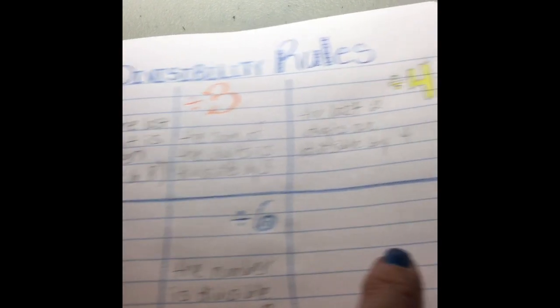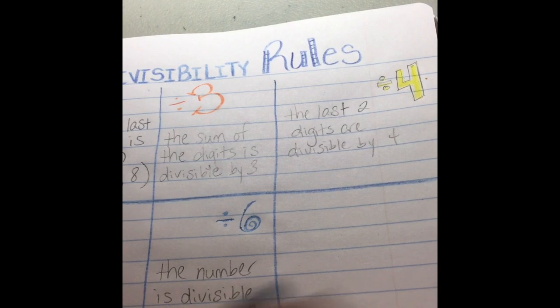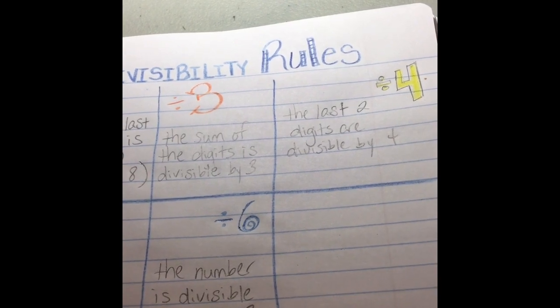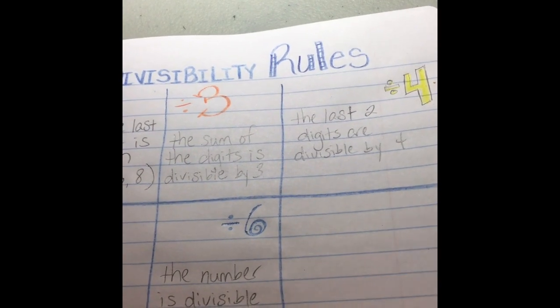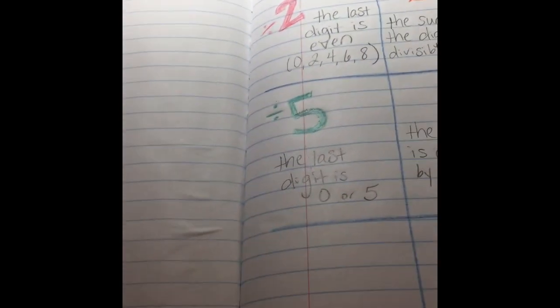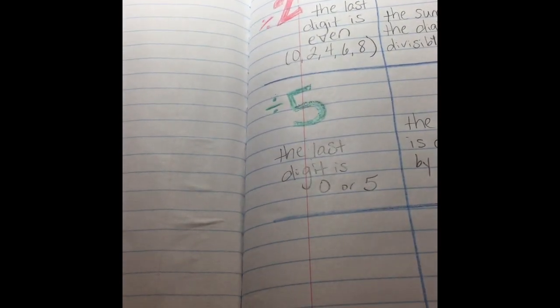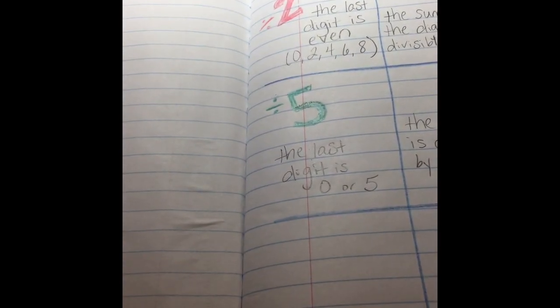I'm going to leave seven blank for right now because it's a little more complicated and I'm just not ready to do that just yet. But there is a rule for seven. We're just not tackling that rule today.